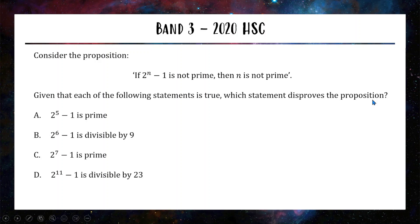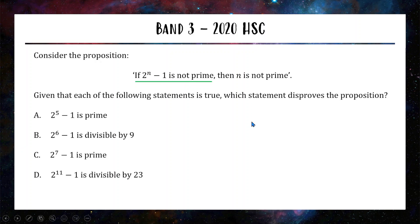Moving on to a band 3 question from the 2020 HSC — another multiple choice. We've got a proposition: if 2 to the n minus 1 is not prime then n is not prime. All four of the following statements are true — which one of them disproves the proposition? Pause the video, take your pick, and then I'll run through my solution. If you want to disprove an if-then statement, think of it as having two parts: the first part is the 'if' and the second part is the 'then'.